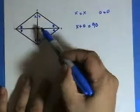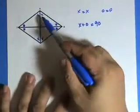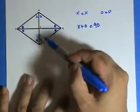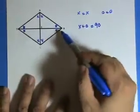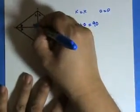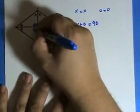Now, what are the angle measures in here? Remember that the diagonals of a rhombus are perpendicular, so each of these angles is 90 degrees.